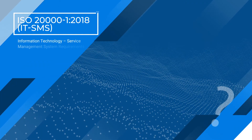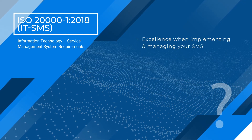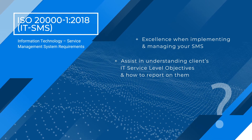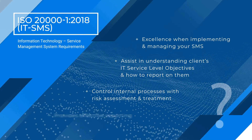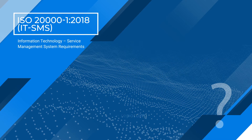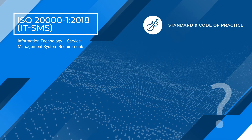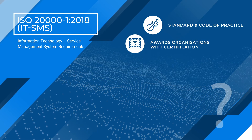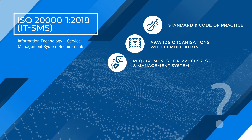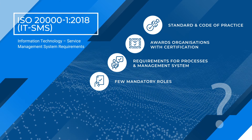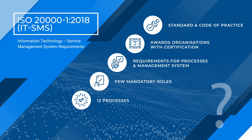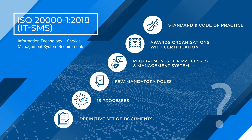Why should you implement the ISO 20000-1 standard? The standard allows excellence when it comes to providing an IT-based service to any organisation. It allows you to control your internal processes and establish a consistent way of reporting to clients on service delivery objectives. ISO 20000-1 is a standard and code of practice that awards organisations with certification, has requirements for processes and management systems, and has few mandatory roles in its organisation structure.